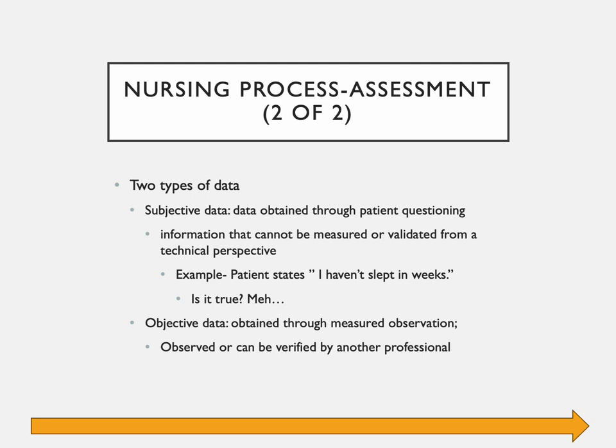Let's get into the two types of data. Subjective data is generally obtained through patient questioning — sometimes family questioning, or whoever was a witness if the patient is comatose or unable to clearly communicate, such as during a stroke. Subjective data is subject to probably being wrong — not because patients are lying, but because patients often don't understand what their disease process means.